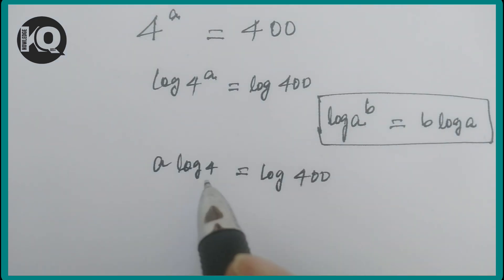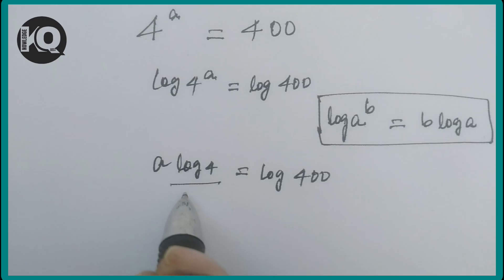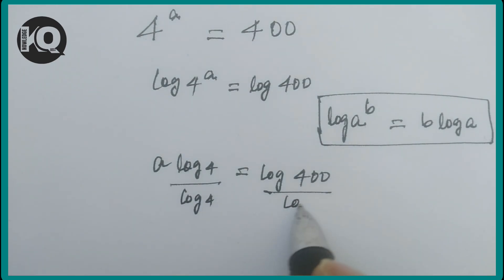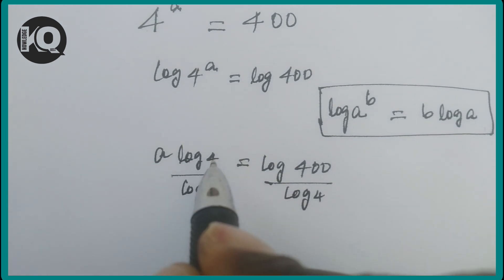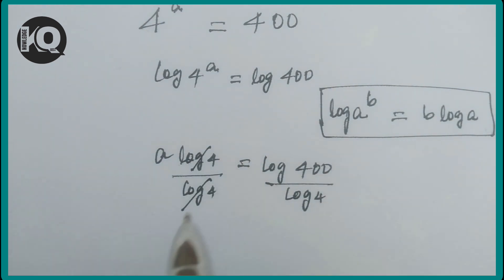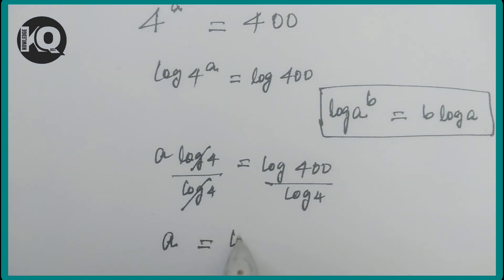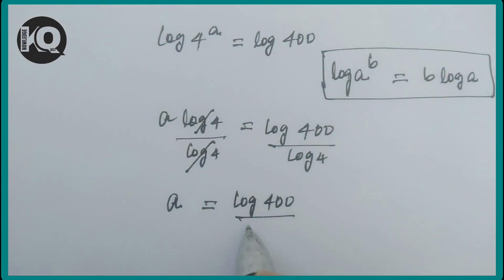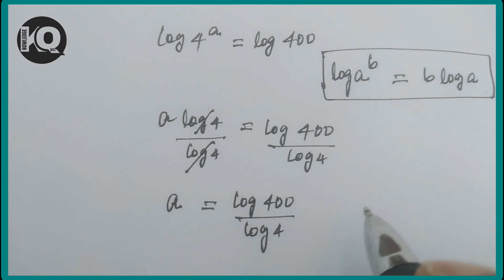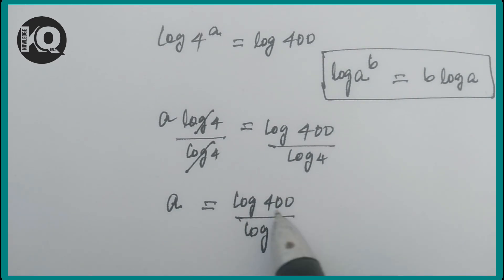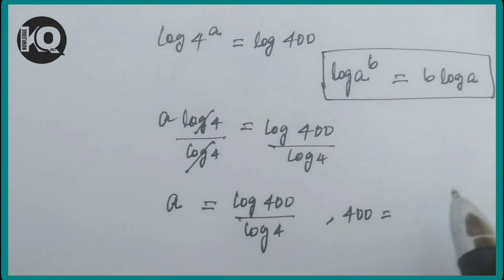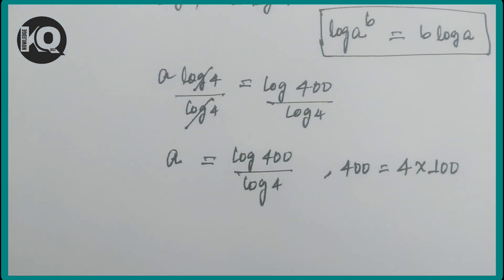Now divide both sides of the equation by log(4). The log(4) cancels on the left, leaving a = log(400) / log(4). We can now factorize 400 as a product of 4 and 100.